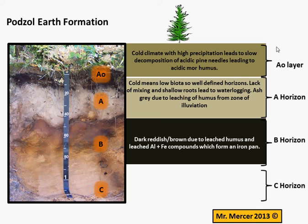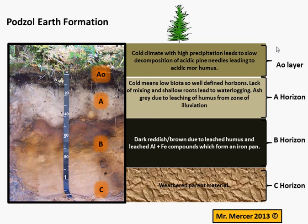It'll also inhibit any roots that do get deep enough down from breaking up the C horizon bedrock. The C horizon bedrock is likely to be impermeable, and this could possibly be due to it being permafrost or just impermeable rock, and the importance of that is that it further inhibits drainage and encourages waterlogging.